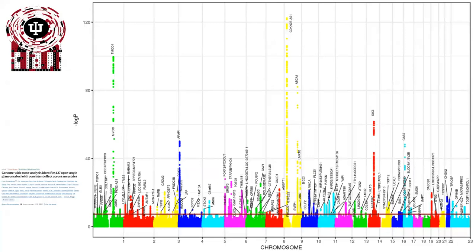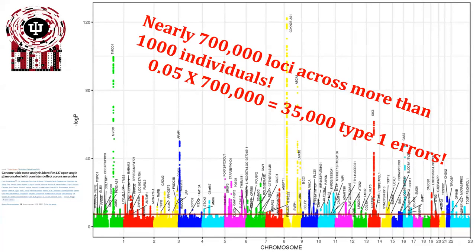Where this does come into play is in real-world studies with multiple comparisons. Here's an example of looking at genetic variables at risk for developing open-angle glaucoma. Because there are so many different possible loci or genes that we could compare, there are lots of comparisons when looking for the effect of glaucoma based upon genes. In this study, there are over 700,000 possible loci across more than 1,000 individuals, which would result in 35,000 different type 1 errors if we only accepted 0.05 as the statistical threshold.